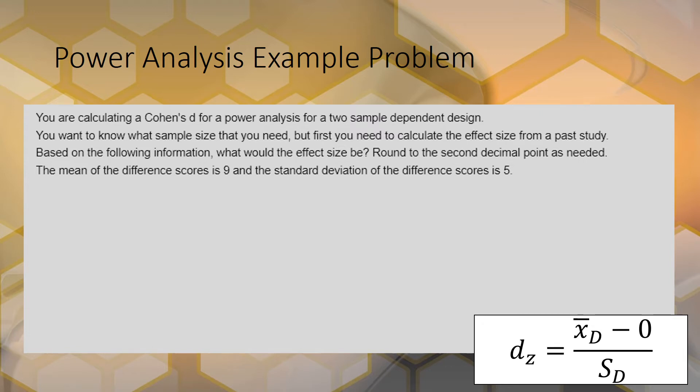We have all the information we need. We don't need to find the standard error because we're doing Cohen's D. So we have d_z, and the mean of the difference scores is 9 minus 0. The 0 comes from the null and it's always going to be 0 for this class for two-sample tests.